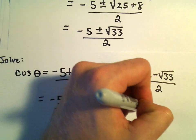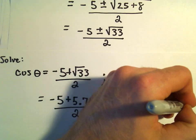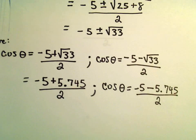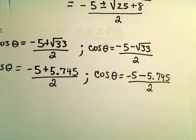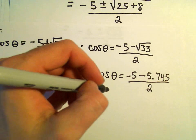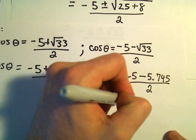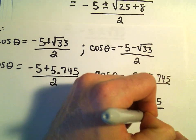So that's one equation. The other will be cosine theta equals negative 5 minus 5.745 over 2. But let's actually look at the second equation first. This is going to be cosine theta equals negative 10.745 over 2.